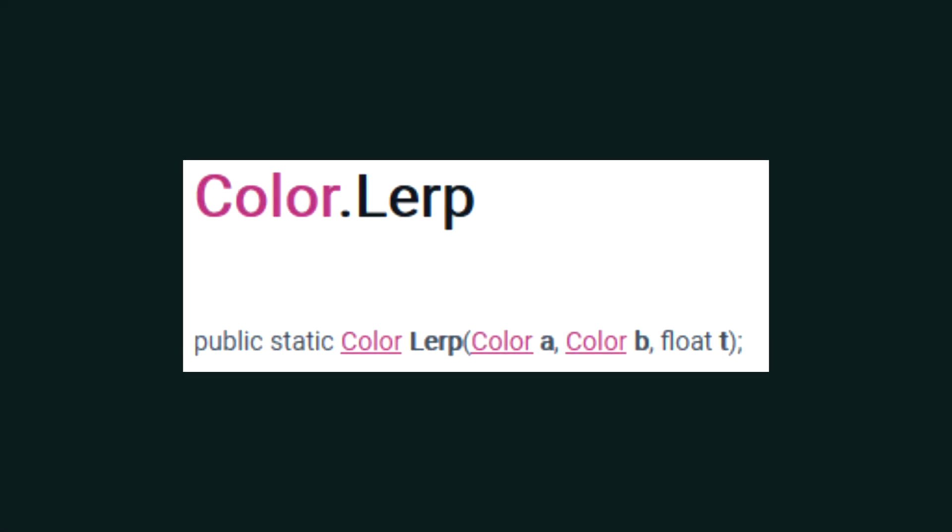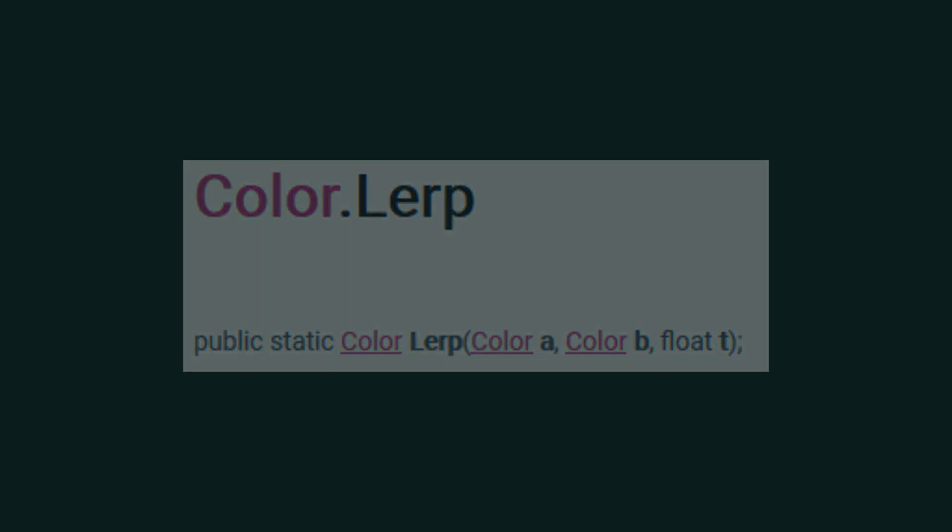In Unity, we can also LERP between colours. You have a start and end colour, and then the percentage value as usual. So, it's pretty much the same as the other variations we've seen so far.